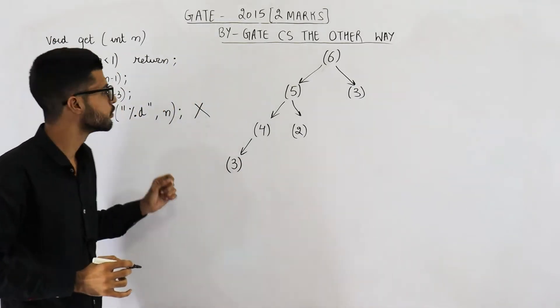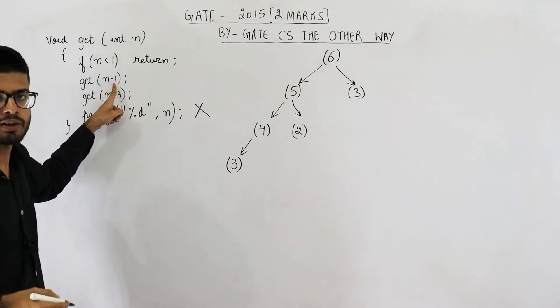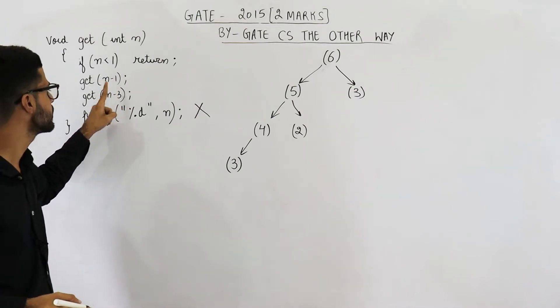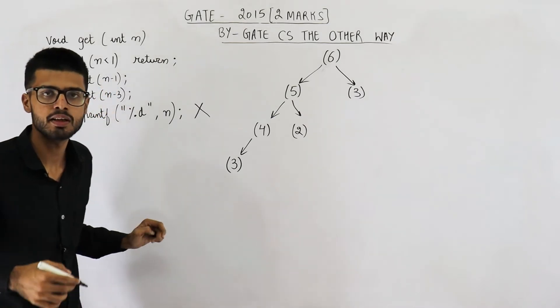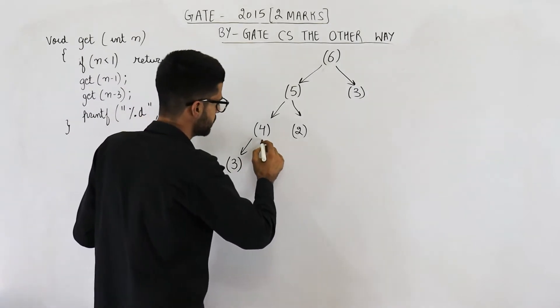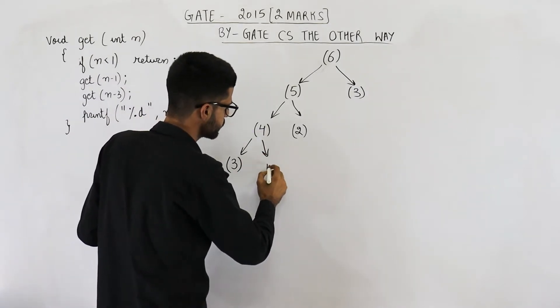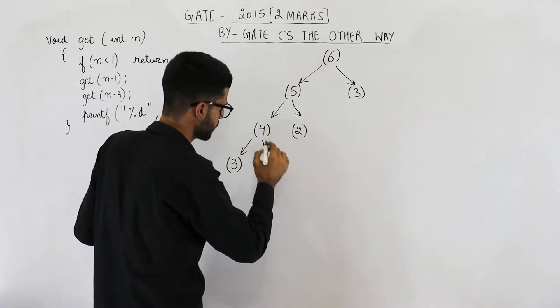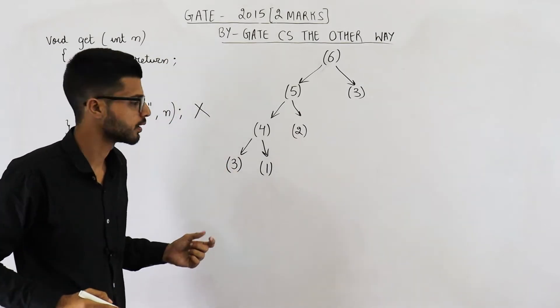First time you will pass n minus 1, that is 4 minus 1, as parameter. Then you are going to pass n minus 3, that is 4 minus 3, as parameter. So 4 minus 3 is 1. So these two functions — get(3) and get(1) — are called.